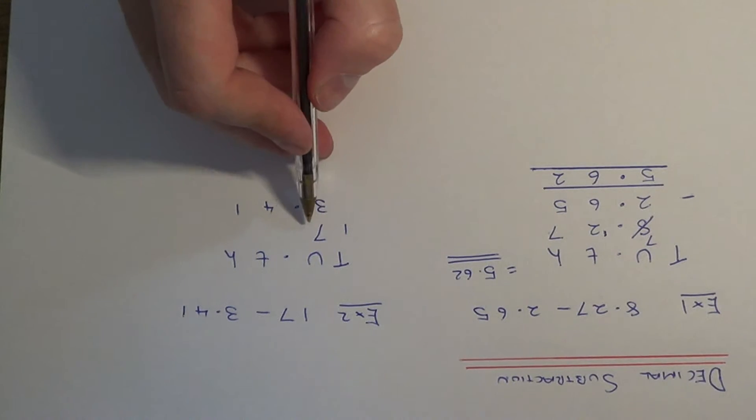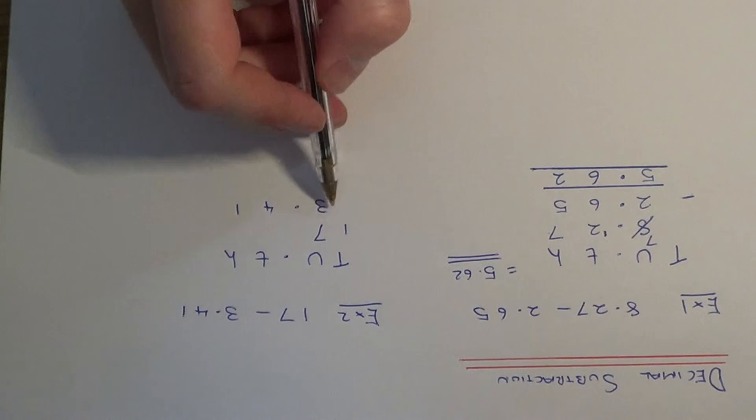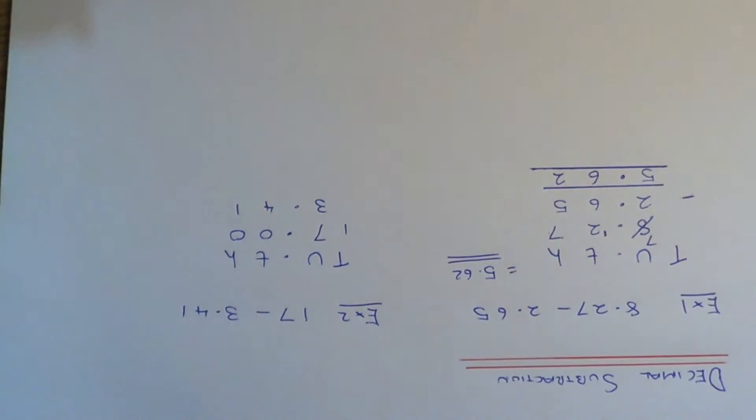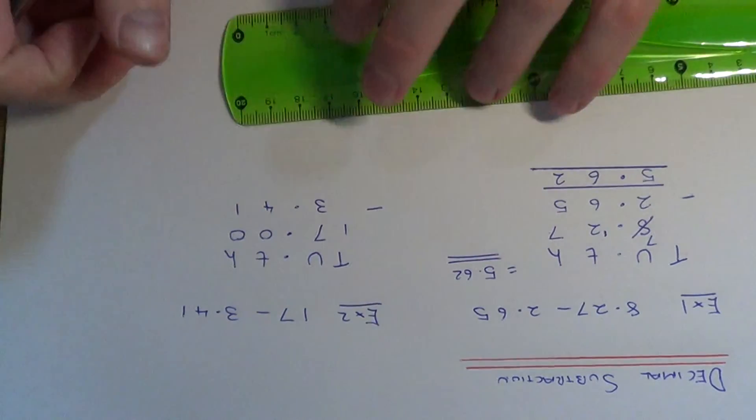With the first number, you might want to write 17 as 17.00. So let's take away the numbers.